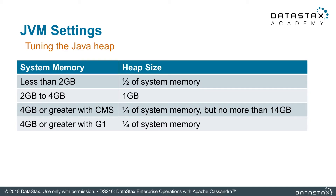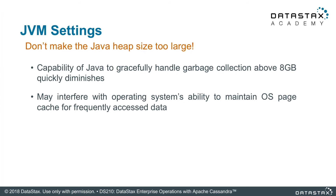Heap new size determines how much of the heap Apache Cassandra will use for creating objects. Think of this as the area for new generational objects — that is, the young and hip crowd in town. Usually new objects are collected sooner rather than later because they are generally temporary instances. By default, you get a hundred megabytes per core for this new area. Don't make your heaps too large; the OS needs room to operate and large heap size leads to large garbage collection times.